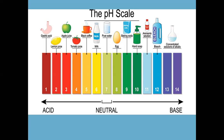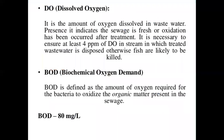The pH scale shows that below 7 is acidic and above 7 up to 14 is alkaline or basic, with 7 being neutral. The acceptable range for treated sewage is 6.5 to 7.5 (neutral). After treatment, if oxidation has occurred, it is necessary to ensure at least 4 ppm of dissolved oxygen.